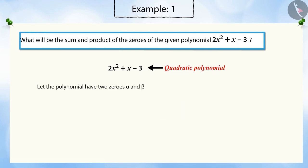Let's assume the polynomial has two zeros α and β. In the previous video, we learned that the sum of the zeros of the quadratic polynomial is the negative ratio of the coefficient of x to the coefficient of x². Substituting the values of the coefficients of x and x² gives the sum of the zeros as -1/2.